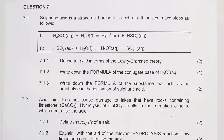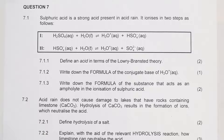7.1. Sulfuric acid is a strong acid present in acid rain. It ionizes in two steps as follows — the two steps are given in the rectangular block. 7.1.1: Define an acid in terms of the Brønsted-Lowry theory. According to the Brønsted-Lowry theory, an acid is a proton donor. Please remember you also need to know the Arrhenius definition for acids and bases.